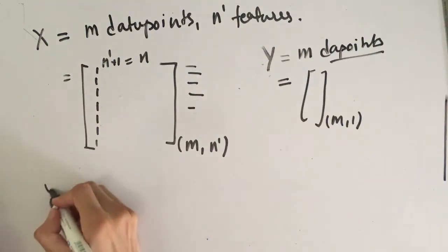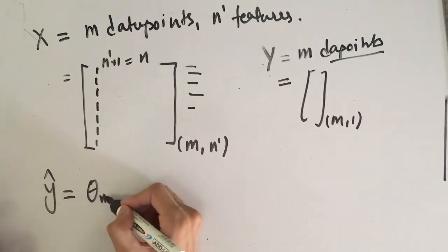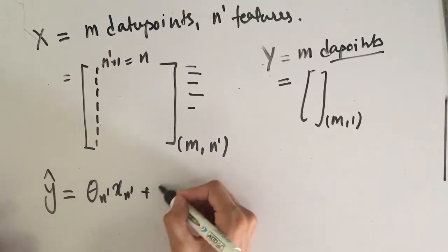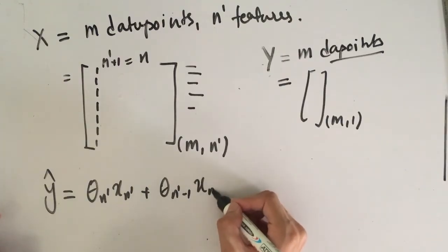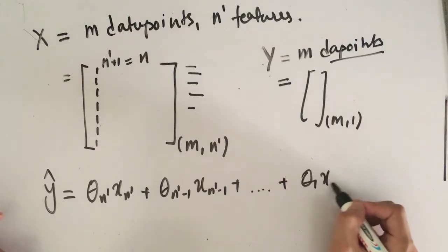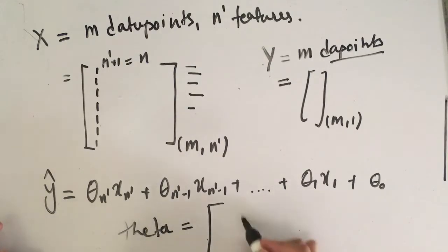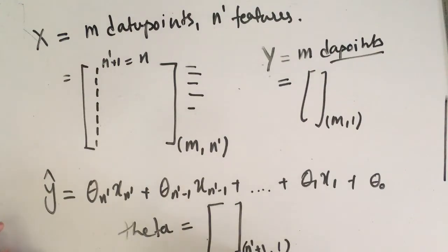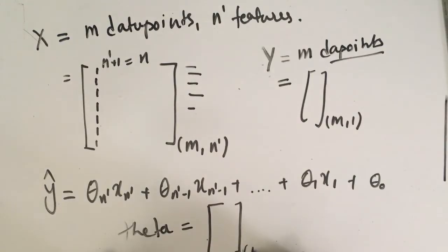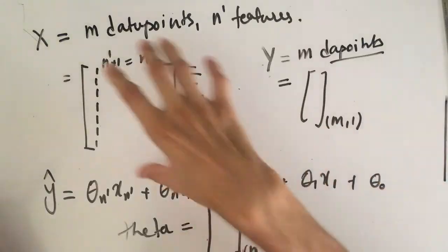We know that the prediction Y-hat has the formula: theta_N' * X_N' + theta_(N'-1) * X_(N'-1) + ... + theta_1 * X_1 + theta_0. If we write a vector for theta, it will have dimension (N' + 1) × 1, which is N × 1. So the size of the theta vector is N × 1.